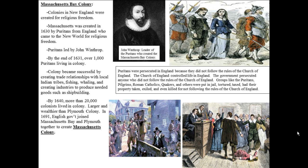The colony became successful by creating trade relationships with local Indian tribes, by fishing, by whaling, and by creating industries to produce needed goods. They were very good shipbuilders and had resources to build ships for England. By 1640, more than 20,000 colonists lived in the colony, and Massachusetts Bay was larger and wealthier than Plymouth Colony. By 1691, the English government joined the Massachusetts Bay Colony and Plymouth Colony to create the Massachusetts Colony.